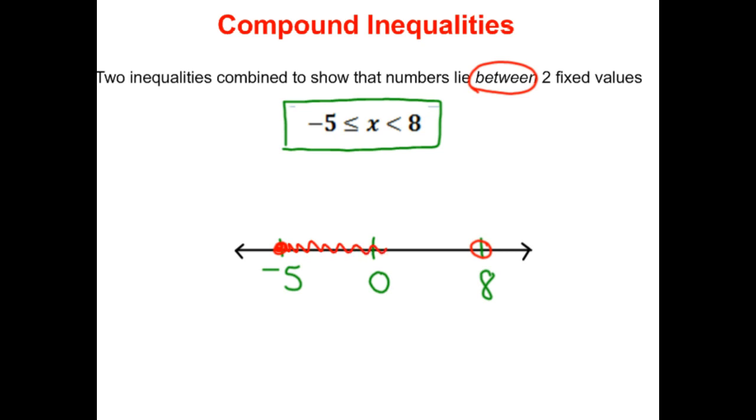So we could shade it this way. And any number that is negative 5 or bigger, or strictly smaller than 8, would be a solution to this compound inequality.